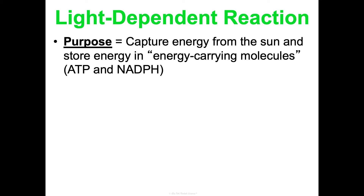The light-dependent reaction: the overall purpose is to capture energy from the sun and store that energy in energy-carrying molecules. Those two molecules are going to be ATP, which you are familiar with from Concept 2, and NADPH. In Concept 2 notes, I mentioned there are other molecules that the body uses to carry energy, but ATP is the main currency. NADPH is another one — it's a part of photosynthesis because it has a P in it. We're going to see NADH in cellular respiration, and that one doesn't have a P. So NADPH is for photosynthesis.